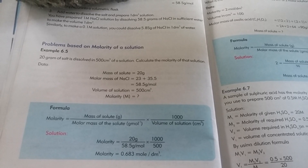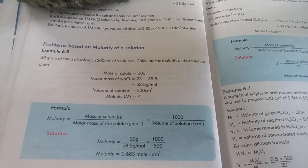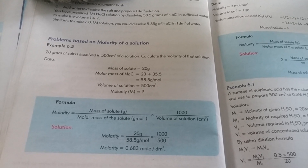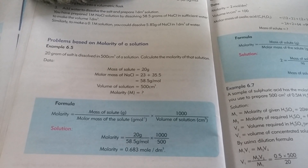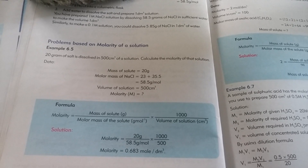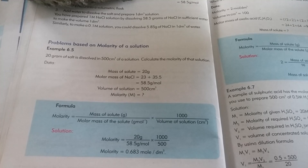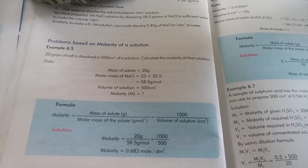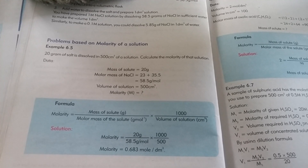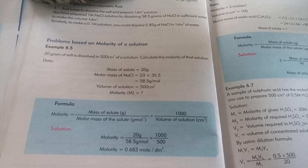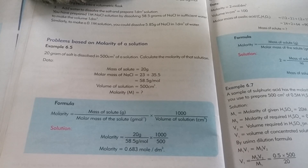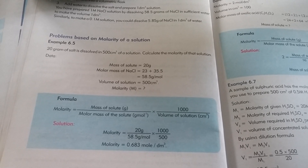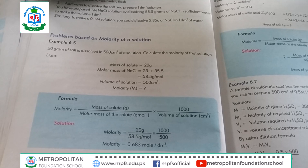We write the atomic masses of the two elements: sodium and chlorine. The atomic mass of sodium is 23 and the atomic mass of chlorine is 35.5. We add 23 plus 35.5 and we get a total molar mass of 58.5 grams per mole.